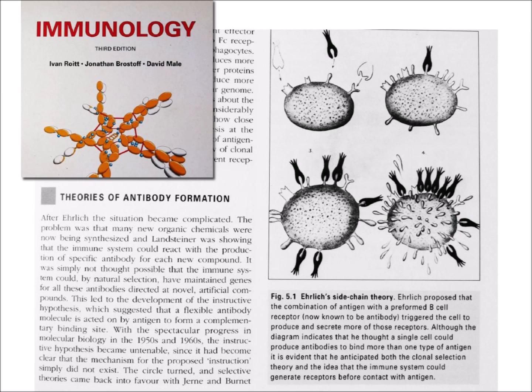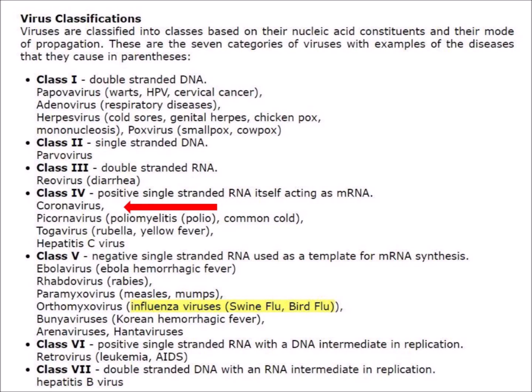Viruses are classified based on their nucleic acid constituents and their mode of propagation. A coronavirus, such as COVID-19, consists of a single strand of RNA which acts as a messenger RNA to produce proteins for its replication. Viruses are responsible for many diseases, including smallpox, polio, yellow fever, rabies, measles, influenza, and the common cold.